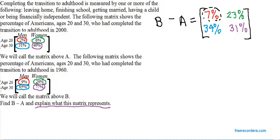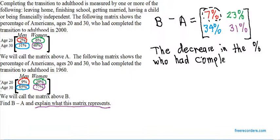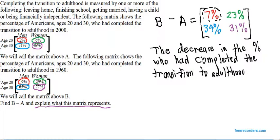So what does this matrix represent? The decrease in the percent who had completed the transition to adulthood.